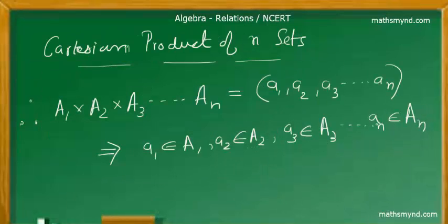Now if you put it in a mathematical or representative format, it means that A1 times A2 times A3 up to An gives the elements A1, A2, A3 to An, such that A1 is an element of set A1, A2 is an element of set A2, and goes on like that up to An is an element of set An.